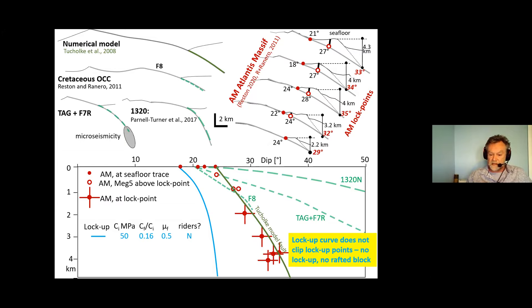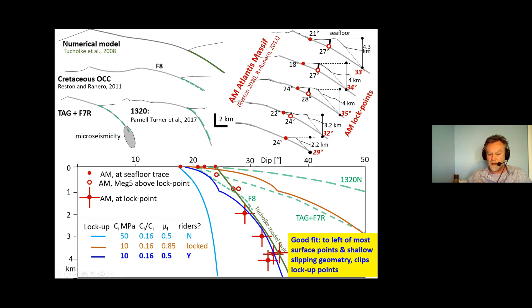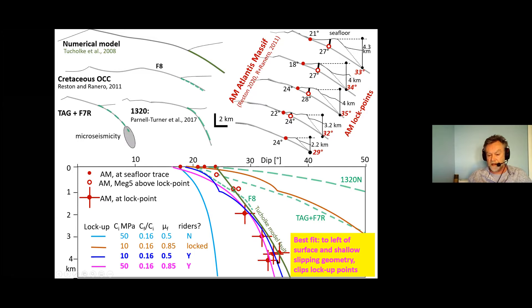So just putting some lockup curves for different parameters in there. The light blue curve basically doesn't lock up anywhere so we form no rafted blocks. The light brown curve is going to be locked up everywhere so again we're not going to form any rafted blocks. The next two curves, the cohesions of initial cohesion of 10, cohesion ratio of 0.16 and friction coefficient of 0.5 that predicts riders but doesn't quite do the job at the surface. The best fit has an initial cohesion of 50, a cohesion ratio of 0.16, a friction on the fault of 0.85 and then we get beautiful riders developed. Anybody who works in fault mechanics probably recognize this is basically Byerlee's law. This is as bog standard fault mechanics as you can possibly get and this is exactly the fault mechanics you need to predict the formation of rider blocks at the Atlantis Massif.